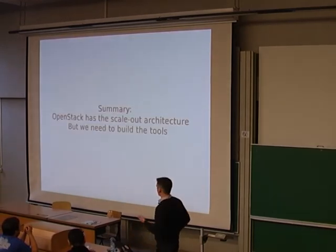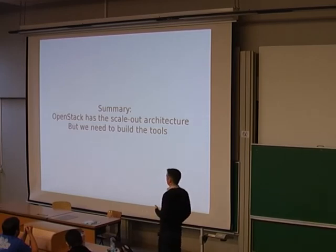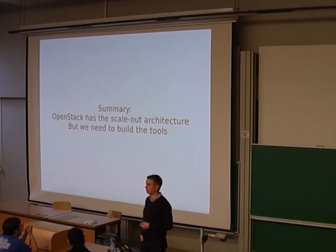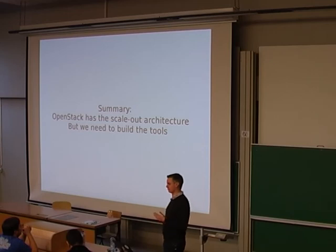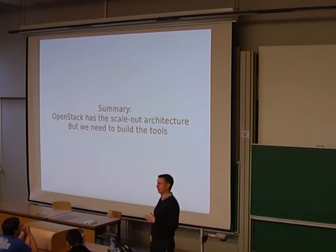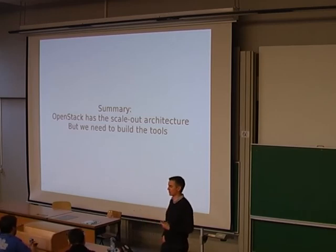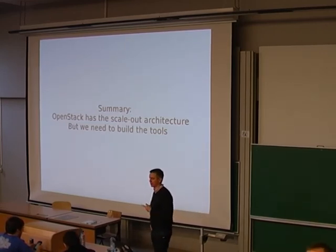All my waffle is just getting to this summary: OpenStack has this great scale-out architecture, and we really need to build the tools that will allow people to deploy in a scale-out fashion. Pretty simple point, and you guys had to listen to me for 25 minutes getting to that simple point. But I think going through the context of what service providers are trying to do with OpenStack really shows you why all this stuff is important — for example, why it's really important that cost scales linearly. You only really get to think about that if you're thinking about trying to figure out what your price per resource is and how to have a predictable margin.